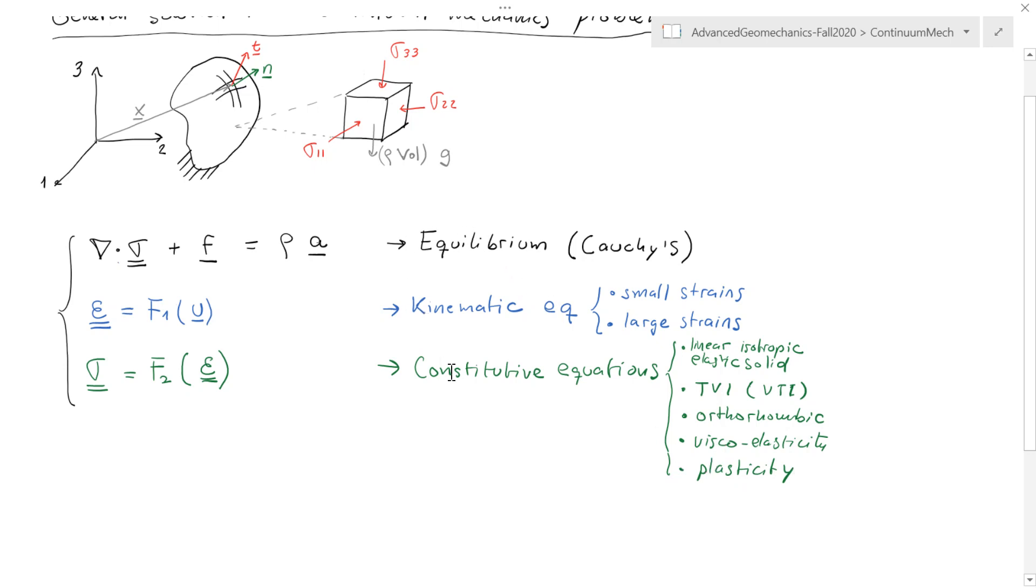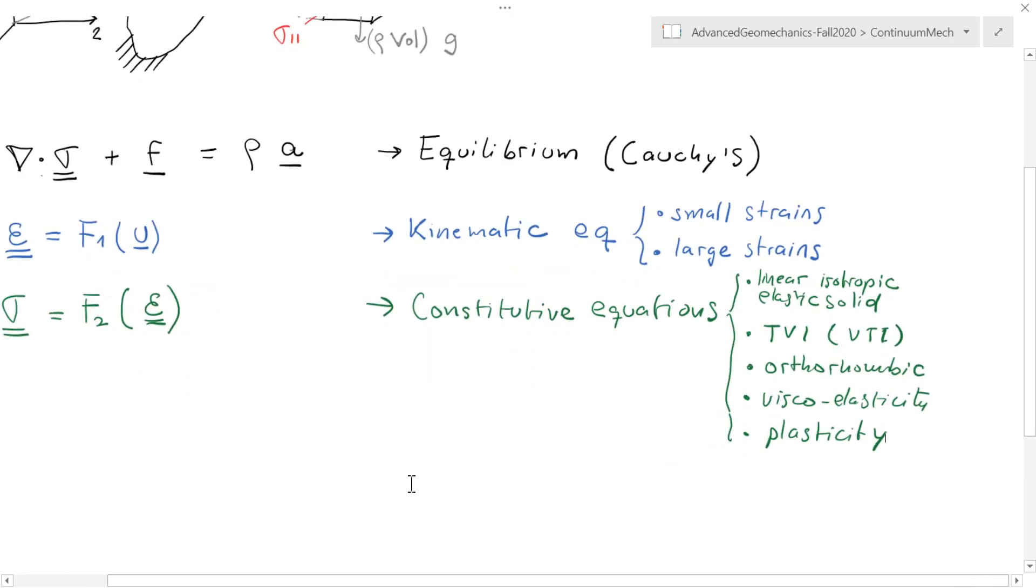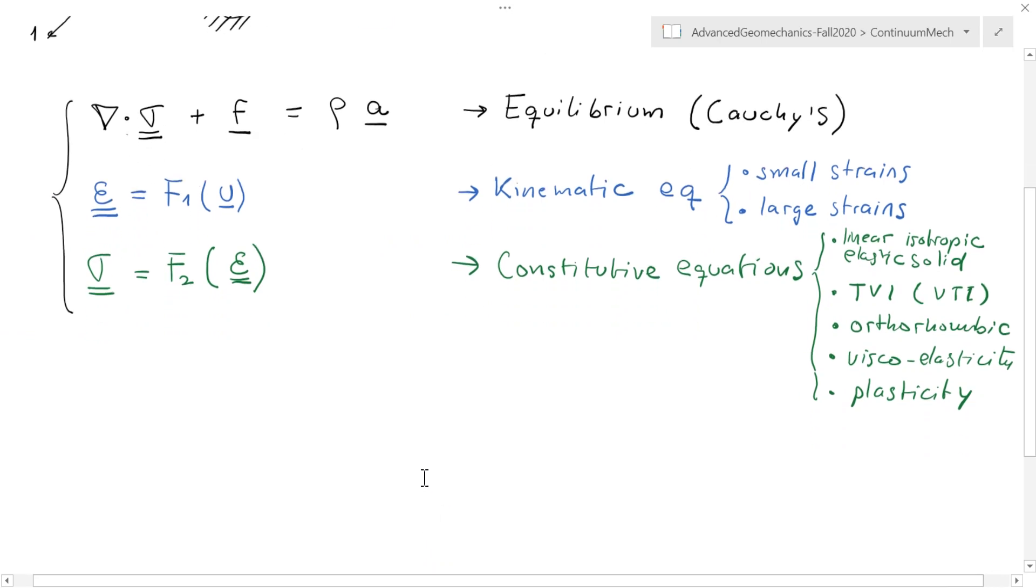In general, if you wanted to combine these equations, what you have to do is put the kinematic equations into the constitutive equations, and then the constitutive equations into the equilibrium equations. Let me start writing the equilibrium equation. The equilibrium equation told us that we need to calculate the divergence of the stress tensor, but now we know that the stress tensor is a function of strains. So I'm going to put in here, instead of the stress tensor, this function which depends on the strain tensor.